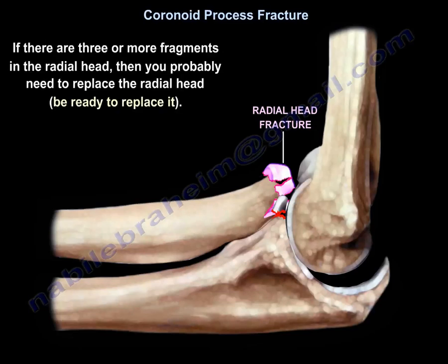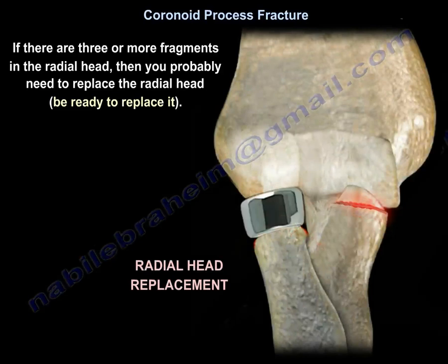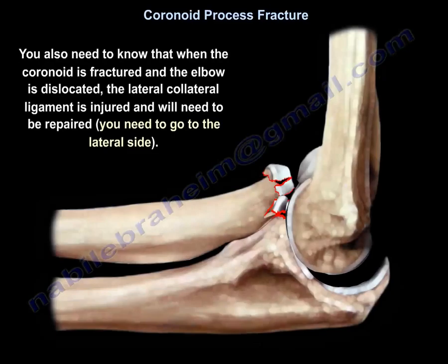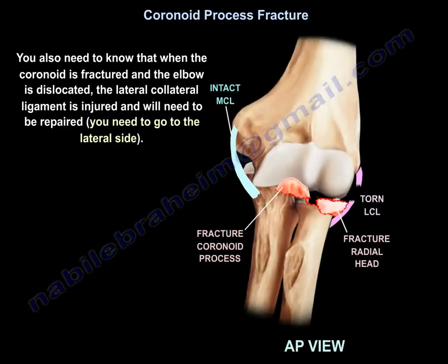If there are three or more fragments in the radial head, you probably need to replace it — you've got to be ready to replace it. You also need to know that when the coronoid is fractured and the elbow is dislocated, the lateral collateral ligament is injured and must be repaired, so you need to go to the lateral side.